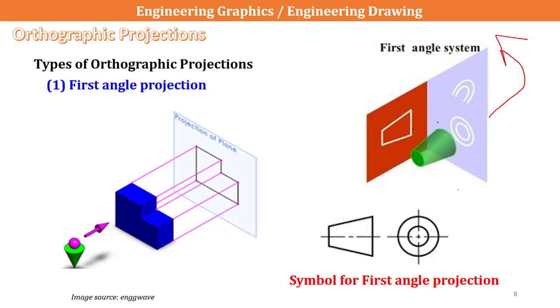If you look at the top, you can locate the symbol. If you look at the first angle, you can locate the symbol. The symbol is the importance of this object.